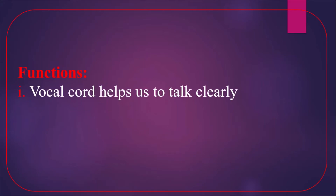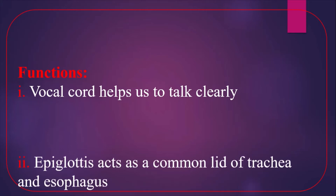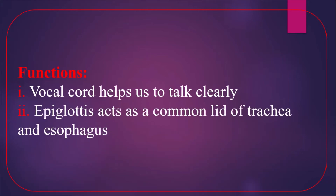Functions of the larynx: number one, the vocal cords help us to talk clearly. Number two, the epiglottis acts as a common lid for the trachea and esophagus — one lid, two tube-like structures. When we talk, the epiglottis covers the esophagus; when we take food, the epiglottis covers the trachea. That is why it is called the common lid of the trachea and esophagus.